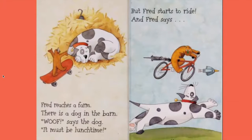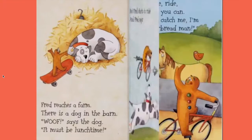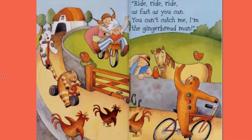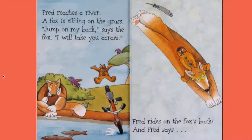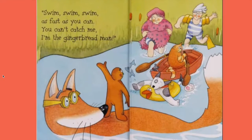Fred reaches a farm. There is a dog in the barn. Woof says the dog — it must be lunchtime! But Fred starts to ride and says, ride as fast as you can — you can't catch me, I'm the gingerbread man. Fred reaches a river. A fox is sitting on the grass. Jump on my back says the fox, I will take you across. Fred rides on the fox's back saying, swim as fast as you can — you can't catch me, I'm the gingerbread man.